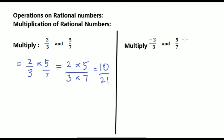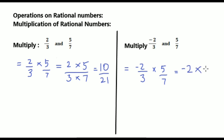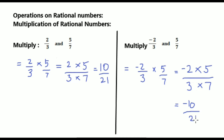See now second one: multiply -2/3 and 5/7. Write down equal to -2/3 into 5/7. That equals to multiply numerators, that is -2 into 5, by multiply the denominators 3 into 7. That equals to -2 into 5, that is -10, by 3 sevens are 21. So the answer is -10/21.